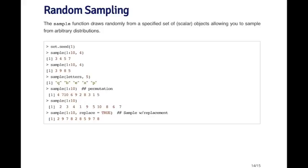I don't have to just sample numbers, I could sample letters if I wanted to. So here I'm taking the letters A through Z, and I'm just going to sample 5 of them without replacement. And I just get Q, B, E, X, and P.